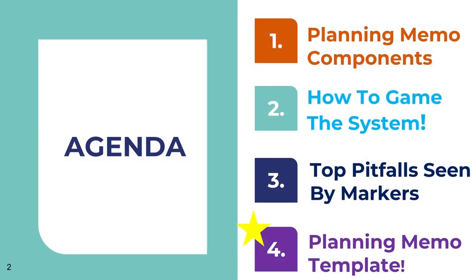The agenda for today is that we're going to go through what is a planning memo and what are the components that make it up. Then we're going to look at how to game the system. To do this, I've looked at multiple feedback guides and took out the most common and critical points for you to score a C each time. Then I'm going to tell you the top pitfalls I've seen as a marker for candidates not getting a C. And lastly, I'm going to end it with a planning memo template that you can use to get a C every single case.